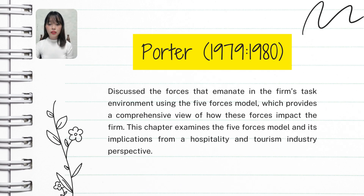Porter's Five Forces Model was introduced by Michael Porter in 1979–1980. According to Porter, this model helps businesses understand the competitive forces within their industry that affect their ability to thrive. It's a tool for analyzing the competitive environment and shaping strategy. The first force is competitive rivalry, or competition among existing firms.